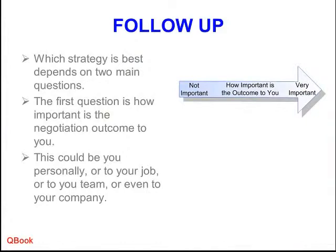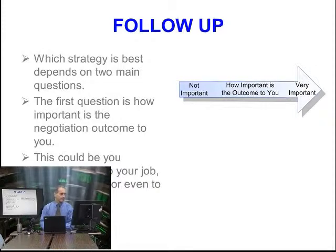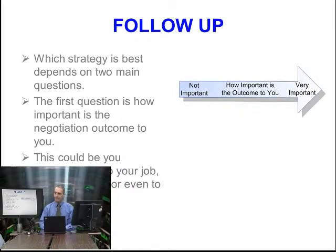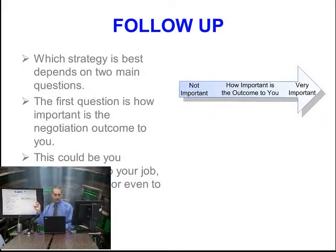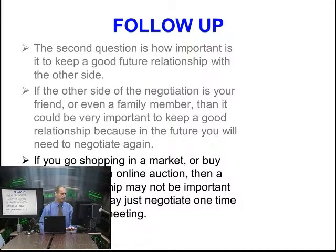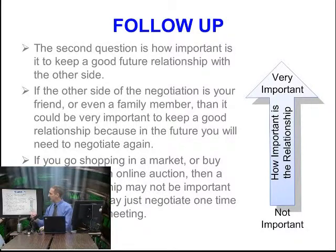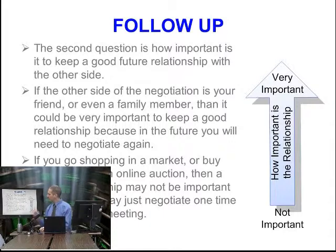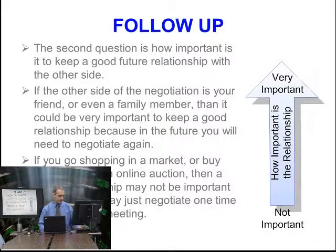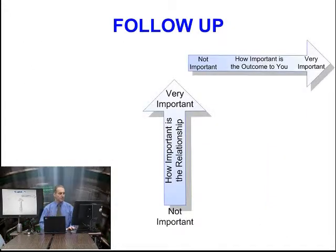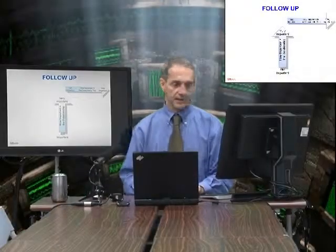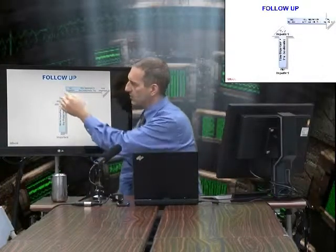Think of the first question as one axis: how important is the outcome to you right now — not important to very important. Think of the relationship as another axis: how important is the relationship — not important to very important. Let's take these two axes and put them together to get a very simple view of how we decide our strategy, looking at how important the relationship is and how important the outcome is, high or low on both.